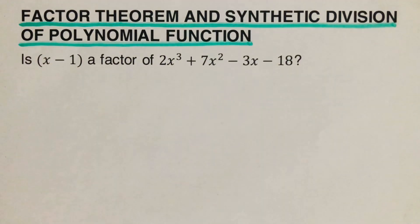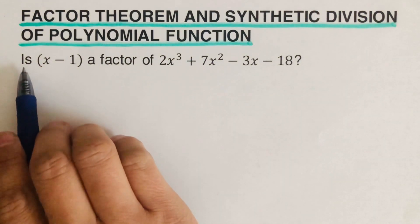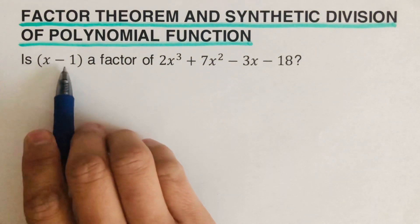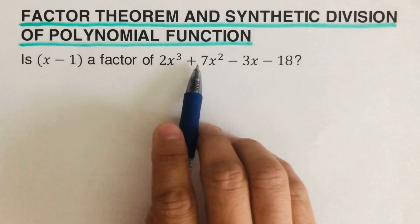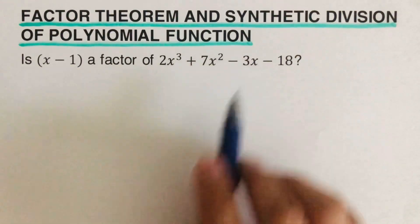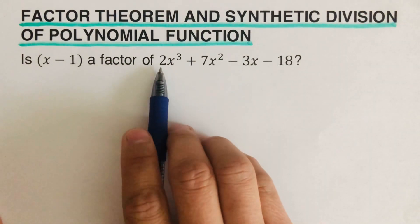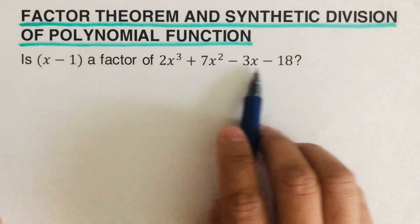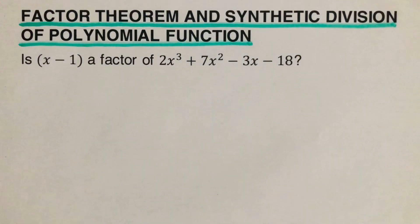Let's take this first example. The question is: is x minus 1 a factor of 2x cubed plus 7x squared minus 3x minus 18? What we are going to do is divide this polynomial by this binomial, and we can go ahead and set it up this way.